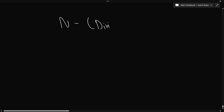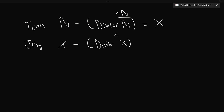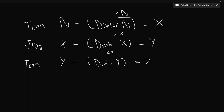After subtracting n by one of its divisors — which is obviously lesser than n — we get a new number x. This is Tom's first turn. Then Jerry comes and from x, Jerry again does the subtraction, choosing a divisor of x that is lesser than x, getting a new number y. Then Tom's turn comes again, and Tom subtracts a divisor of y to get a new number z.